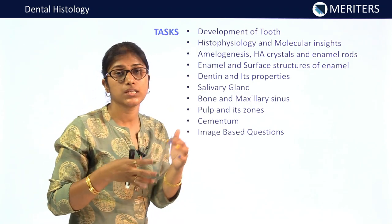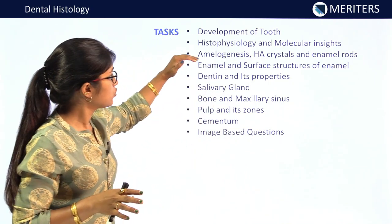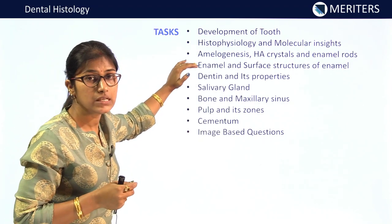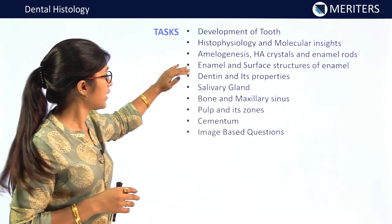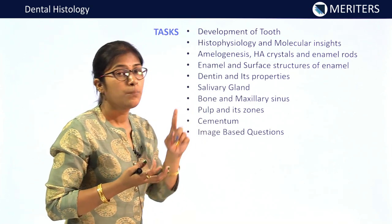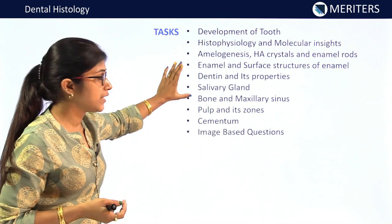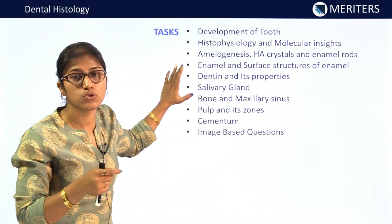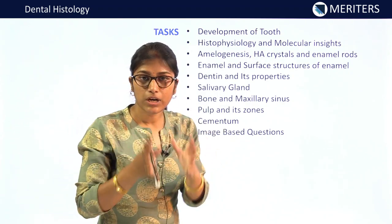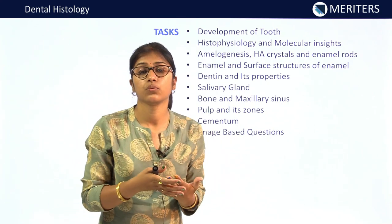Based on analysis: development of tooth — many questions were there. Amelogenesis — direct IBQ was there on the stages, so you should be thorough. Enamel and surface structures were also asked. Dentine: direct structural questions like lamina limitans were asked. Salivary glands: IBQs on myoepithelial cells were asked. Bone and maxillary sinus: histology of bone was asked. Pulp and its zones: what cells, fibers, nerve fibers, collagen fibers are there — many questions. Cementum: types, location, basic structure.